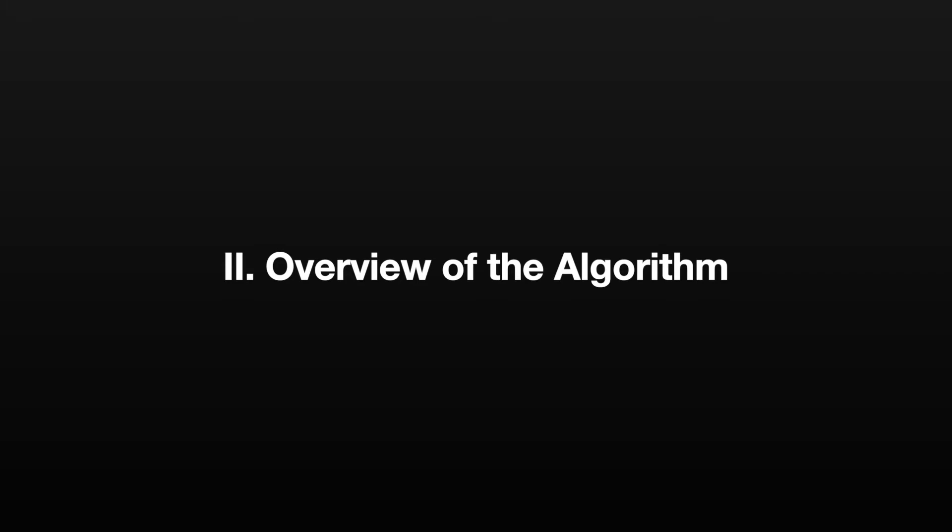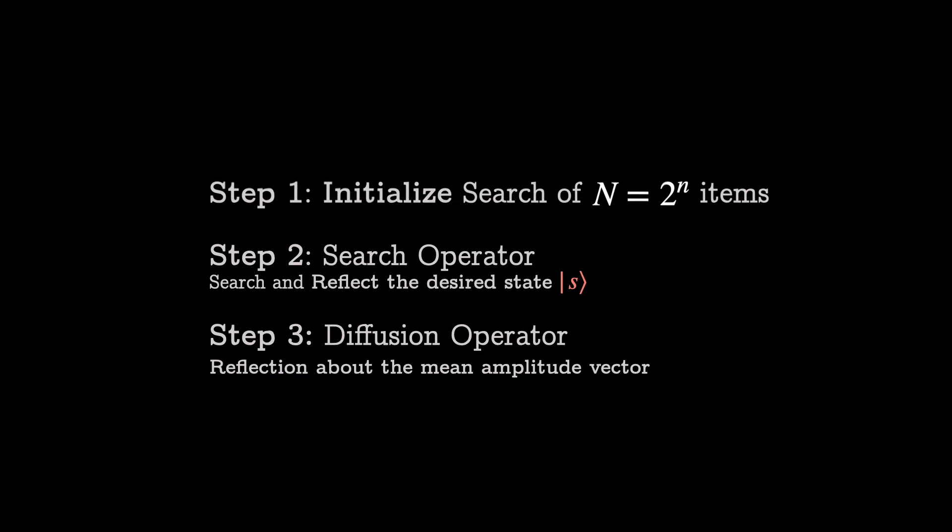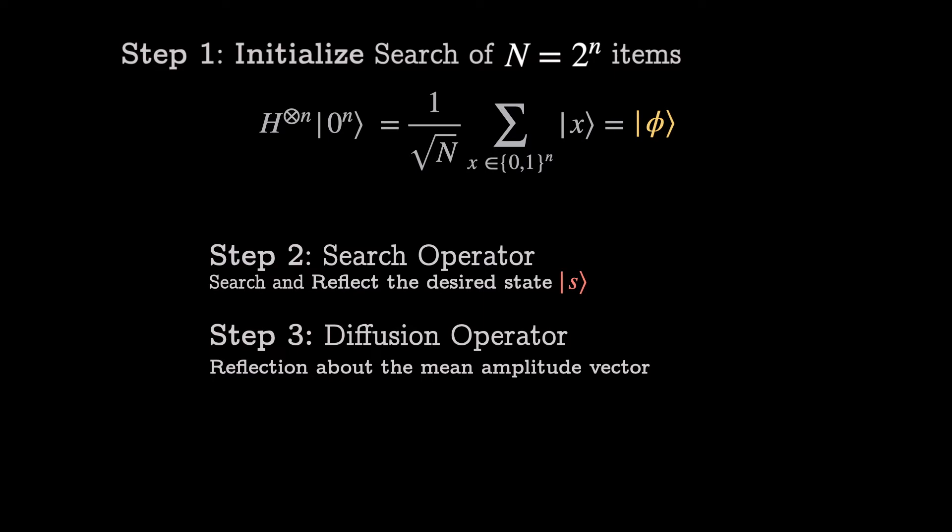Now onto Grover's algorithm. The algorithm can be broken down into three steps. We will be explaining each step in detail in the video. For now, here's an overview. Step 1 is probability initialization. As the name suggests, it is to initialize our quantum state vector to represent the unstructured search problem. That is, initially, there is an equal probability that any of the keys will be the right key. So our state vector is a superposition of all possibilities with uniform amplitude. This state will be referred to as phi.